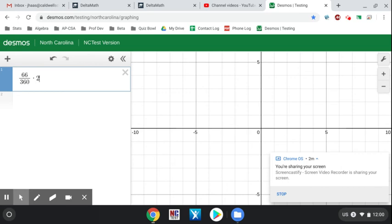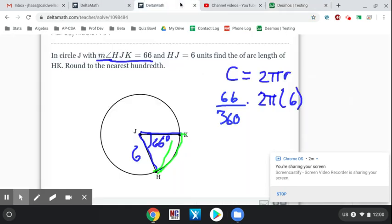times 2π. You can use the π symbol or if you're using a keyboard you can just type in pi and it gives you the π symbol. Then multiply that by my radius of 6. So that gives me 6.911... To the hundredth, that's two decimal places, so it's 6.91. That should be your answer.